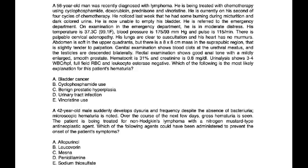Clinical vignette: A 56-year-old man recently diagnosed with lymphoma is being treated with chemotherapy using cyclophosphamide, doxorubicin, prednisone, and vincristine. He is on his second of four cycles of chemotherapy. Last week he noticed burning during micturition and dark-colored urine, and is now unable to empty his bladder. He is referred to the ED where he is in moderate distress. Temperature is 37, blood pressure is 175, pulse is 115.